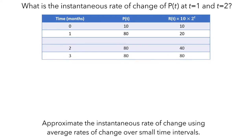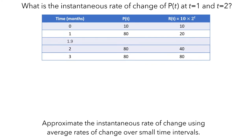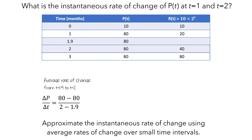Let's start by zooming in to the interval starting at t equals 1.9 months. Since the babies were all born at t equals 1, there were 80 rabbits at t equals 1.9 months. To compute the average rate of change from t equals 1.9 to t equals 2 months, we compute the change in the number of rabbits divided by the change in time. For this interval, the change in rabbits is 80 minus 80, and the change in time is 2 minus 1.9, which results in a rate of change of 0 rabbits per month.